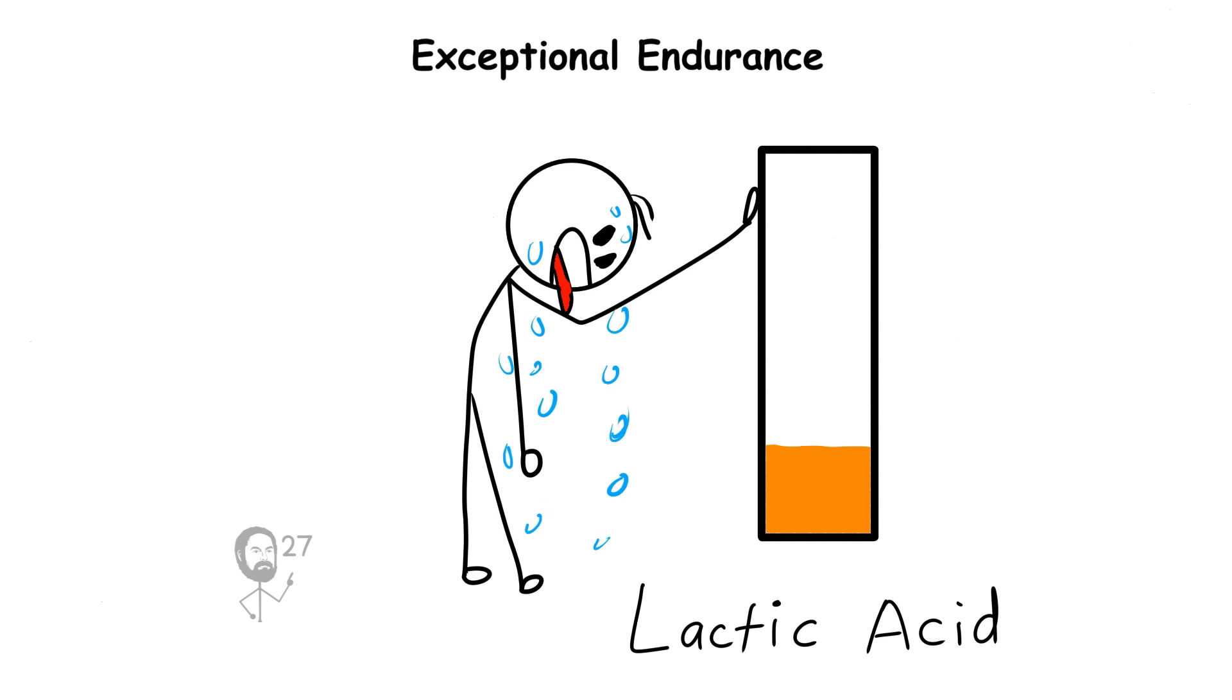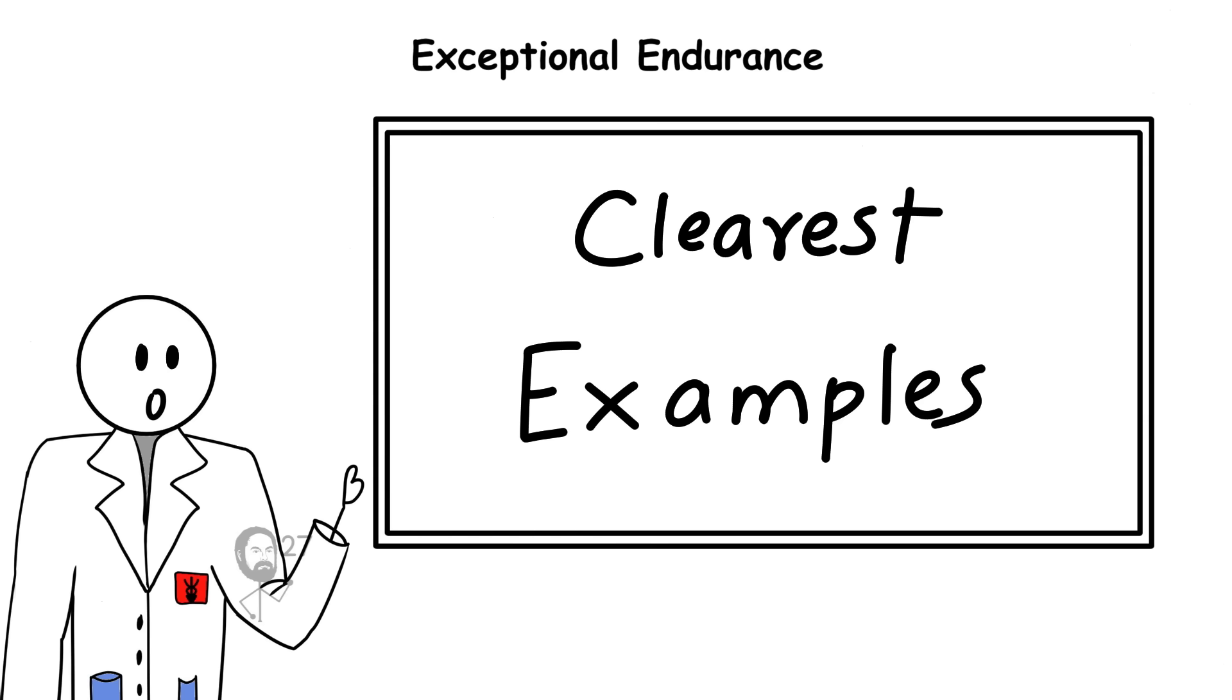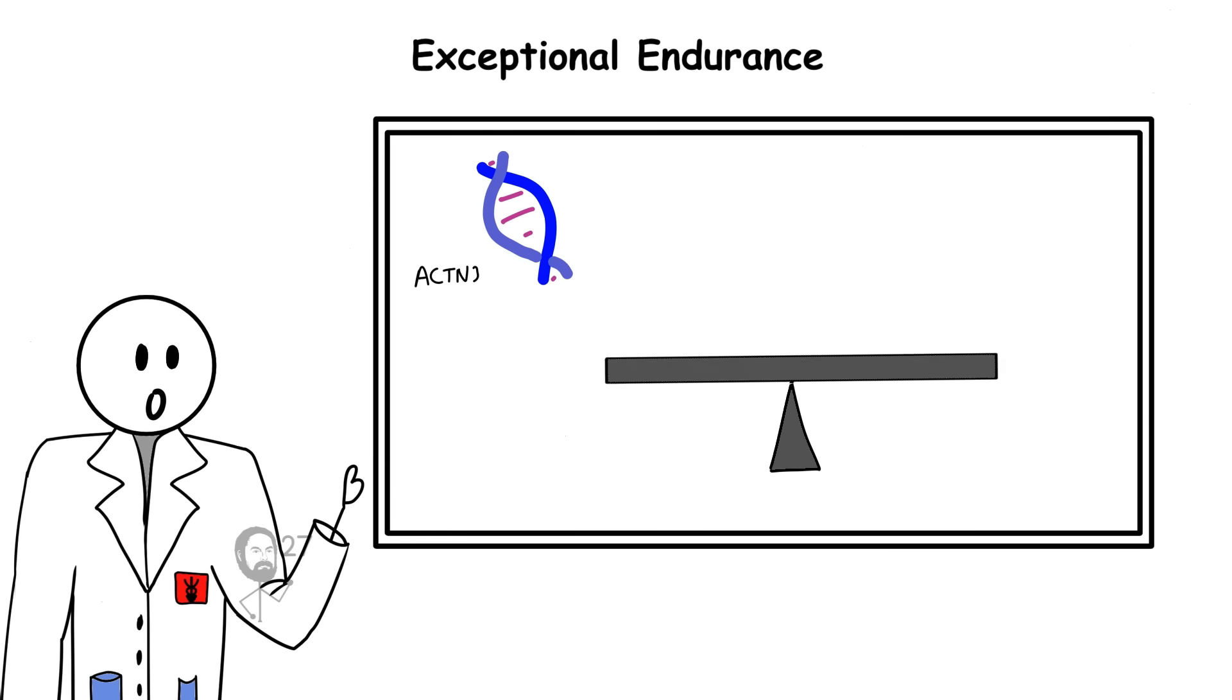Endurance-oriented muscle fibers allow the body to perform repetitive activity for extended periods without the rapid buildup of lactic acid that normally causes exhaustion. Elite athletes often carry this variation, but it can appear in anyone by chance of inheritance. It is one of the clearest examples of how a single gene can tip the balance between explosive strength and lasting endurance.